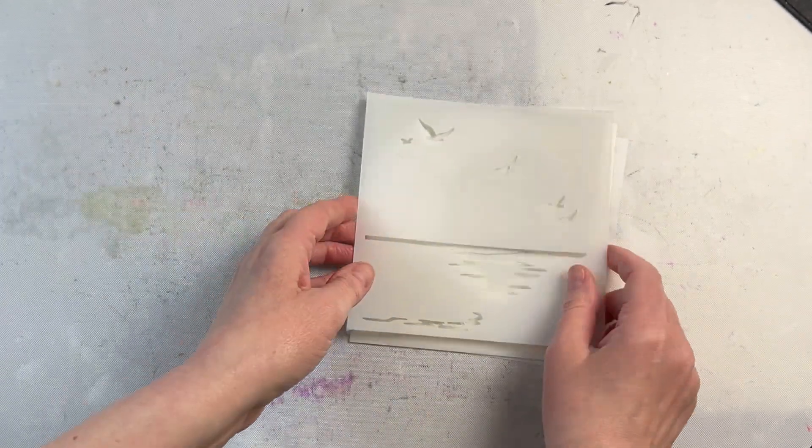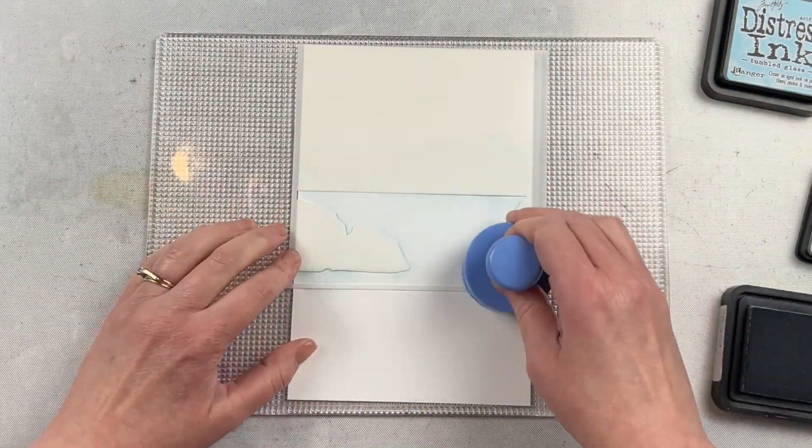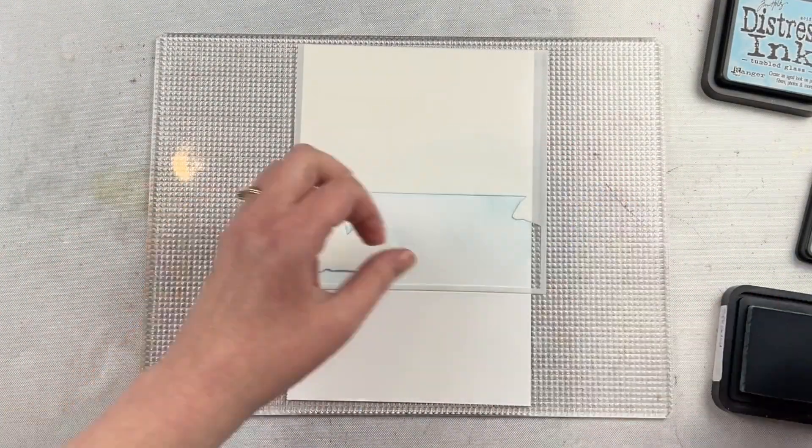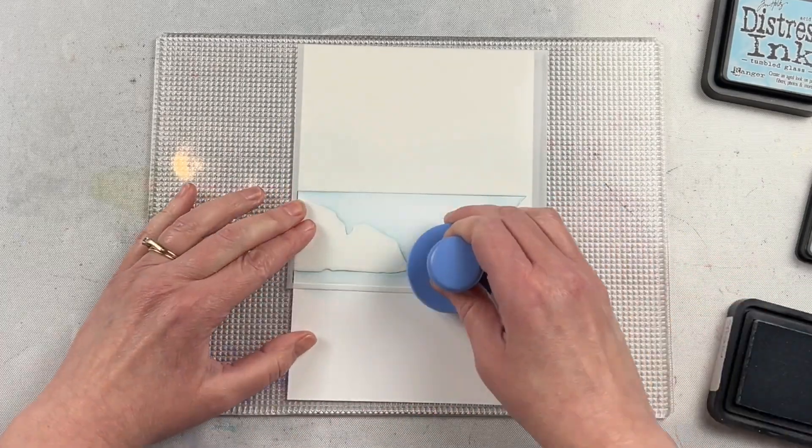Each stencil is numbered in the top right corner, but you can do it in whatever order and you're still going to get a beautiful result. You'll get the same background.